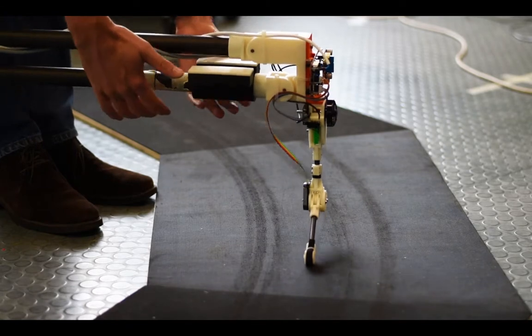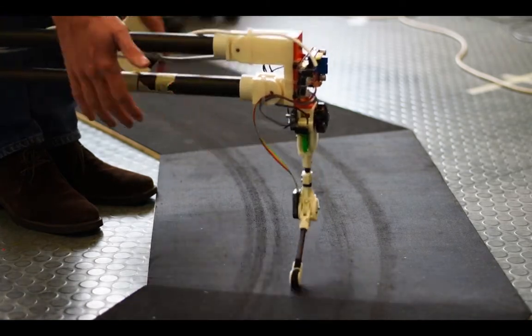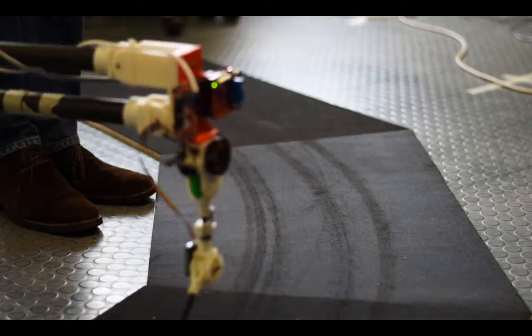Specifically, we use reduced gravity as training wheels to learn fast hopping with a monoped robot.